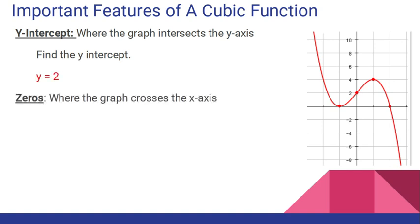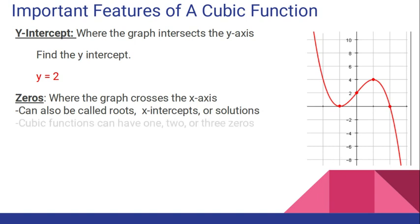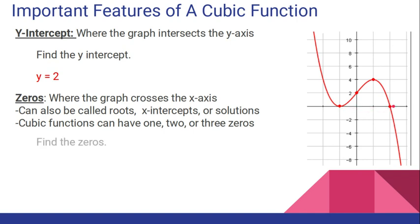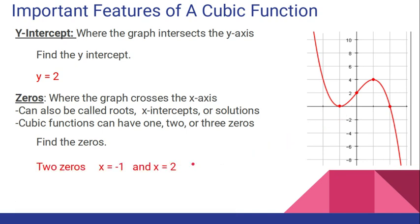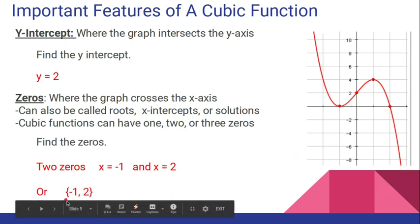Let's take a look for the zeros. Remember, those are the roots, the x-intercepts, or the solutions, and there could be 1, 2, or 3 of them. Look at your x-axis and you should see that I cross here at negative 1 and here at 2. So there are two zeros: x equals negative 1 and x equals 2. If you have more than one solution, you could write them in set notation — that's when you write them inside braces: {negative 1, 2}.